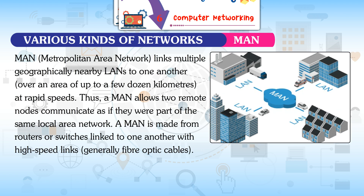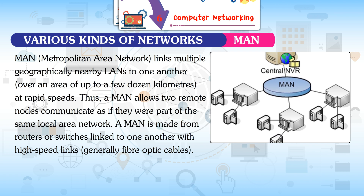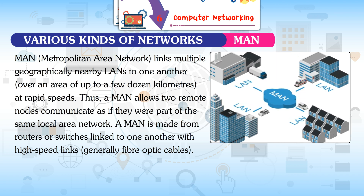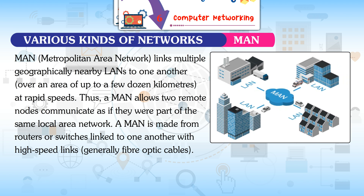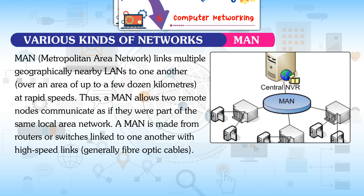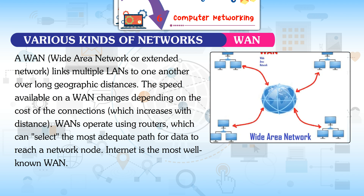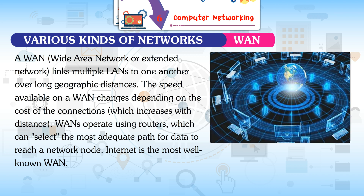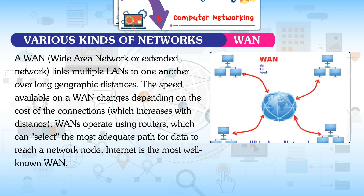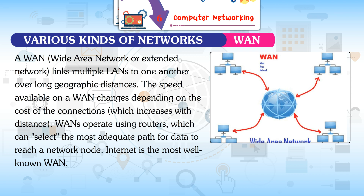MAN (Metropolitan Area Network) links multiple geographically nearby LANs to one another over an area of up to a few dozen kilometers at rapid speeds, allowing remote nodes to communicate as if part of the same LAN. A MAN is made from routers or switches linked with high-speed links, generally fiber-optic cables. WAN (Wide Area Network or Extended Network) links multiple LANs over long geographic distances. Speed on a WAN varies with connection cost, and WANs operate using routers to select the most adequate path for data.